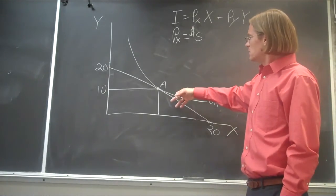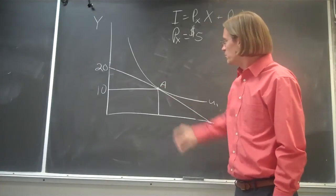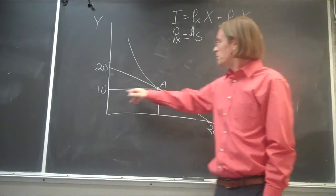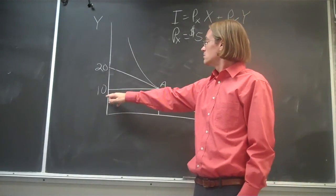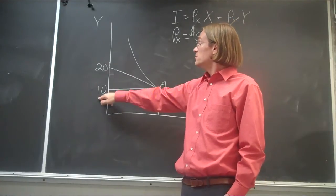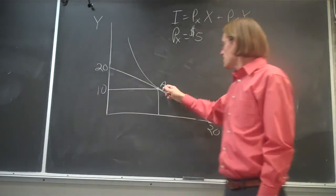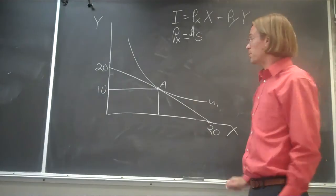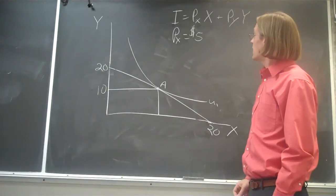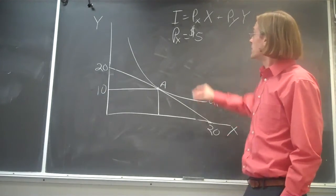We can look at this first example here. If we're at point A, then we're spending our money to purchase 10 units of good Y, but we don't know how many units of good X we're purchasing. So to do that we need to go in and figure out a couple things.